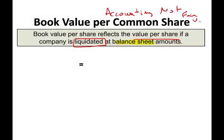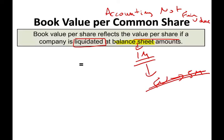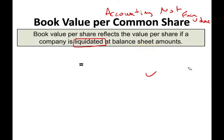For example, let's assume you have a building. On the balance sheet, that building might be worth a million dollars, but the fair value of that building might be worth five million. We're not using fair value; we are using the balance sheet amount — everything is accounting figures. And remember, accounting figures don't reflect market value. Oftentimes they reflect historical cost.